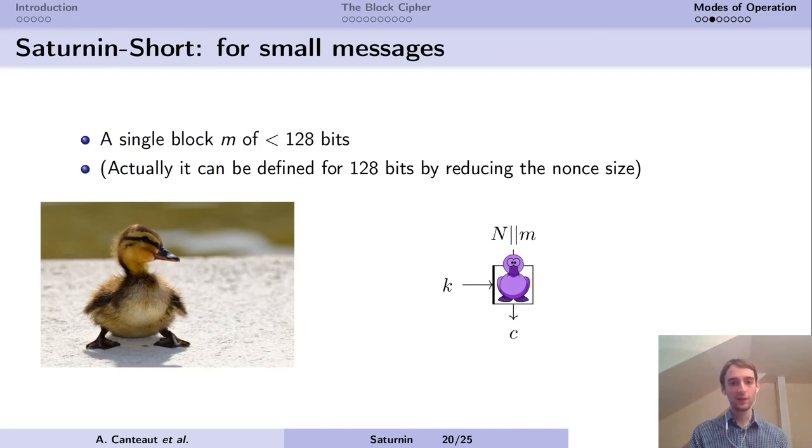Let's start with the simplest: Saturnin Short. If you want to encrypt a single block of less than 128 bits, or maybe exactly 128 bits, just concatenate the nonce and the message and we encrypt. The ciphertext and the tag are not two separate values, it's just a single value of 256 bits. It's very efficient because it only requires calling Saturnin once.